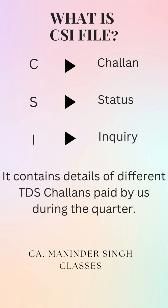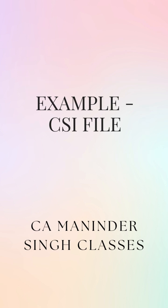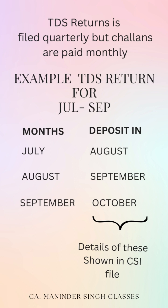So what is this CSI file? CSI file is Challan Status Inquiry file. It contains details of different TDS Challans paid by us during the quarter. TDS return is filed quarterly but Challans are filed monthly.